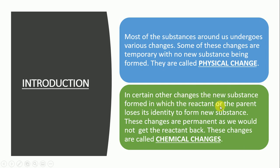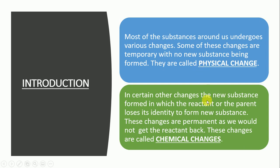Aise changes jo hain woh kehlate hain physical change. In certain other changes, a new substance is formed in which the reactant or the parent loses its identity to form new substances. These changes are permanent as we would not get the reactant back — these changes are called chemical changes. The basic difference is that in physical change there is no new substance formed, and in chemical change there is a new substance formed.